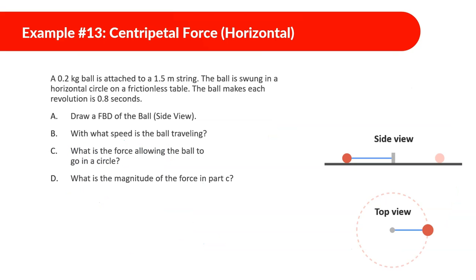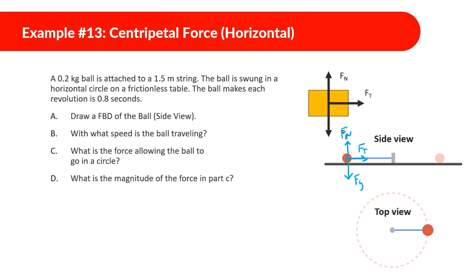A 0.2 kilogram ball is attached to a 1.5 meter string. The ball is swung in a horizontal circle on a frictionless table, making each revolution in 0.8 seconds. Draw a free body diagram from the side view. We have the force of gravity going down, the normal force keeping it on the table, and the tension in the string allowing it to go in a circle — that's the centripetal force.